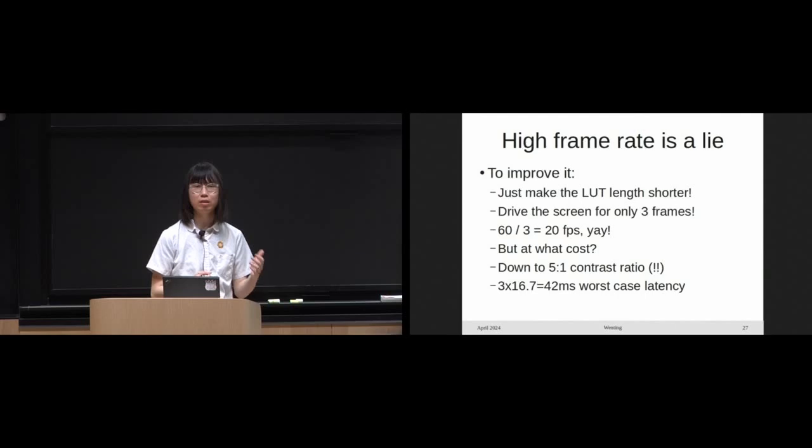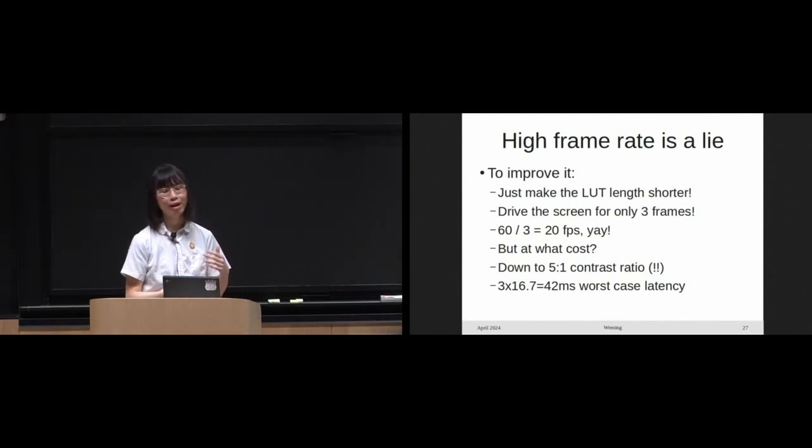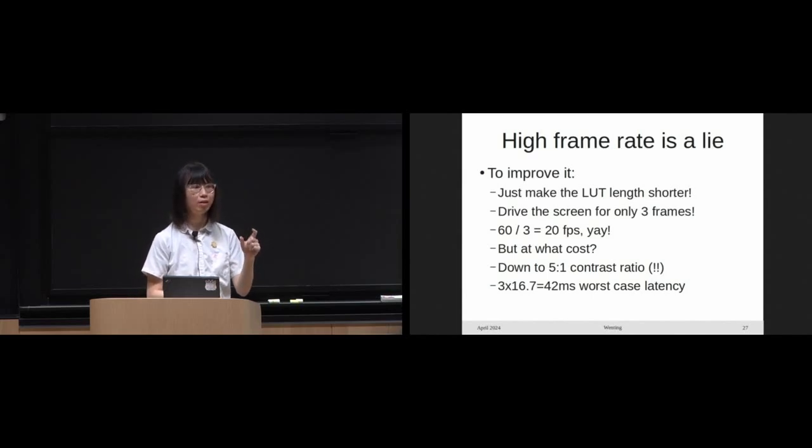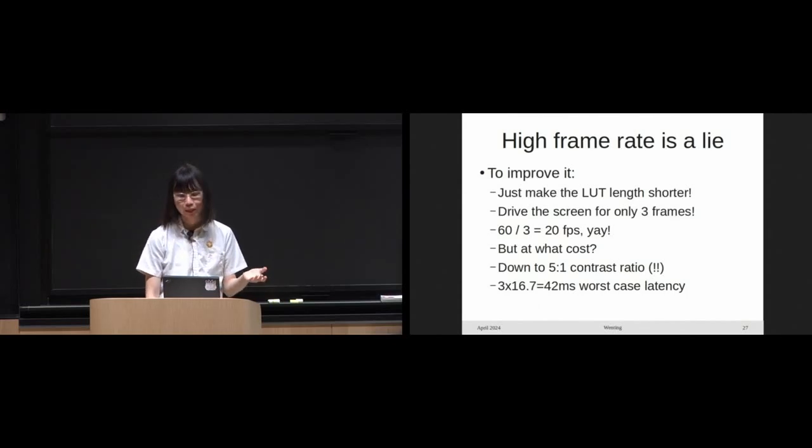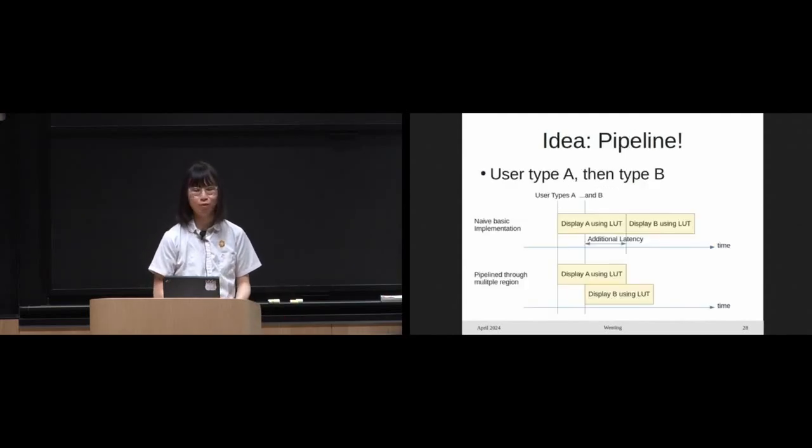So e-ink monitors on the market right now, they have something called the high refresh rate technology. That's really just a dial you can switch to intentionally underdrive the screen. Not for grayscale, but to improve the frame rate. So we can get like 15 to 20 fps on these monitors at the cost of lower contrast, down to like 5 to 1. To be honest, 15 to 20 is not good either, but this is what's possible. So am I done then? Of course not. I can do better.